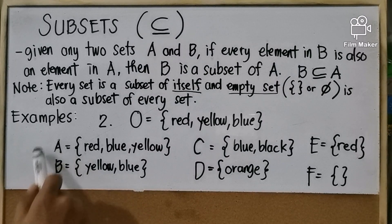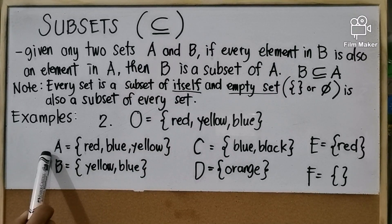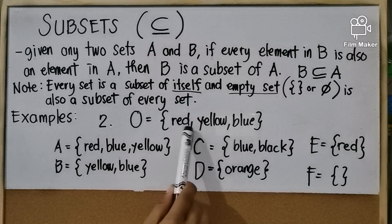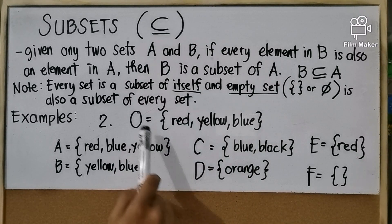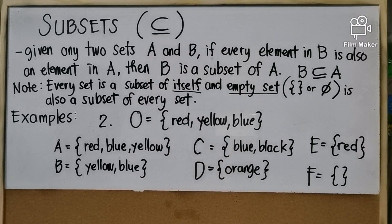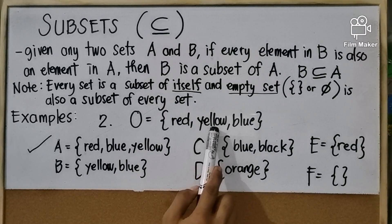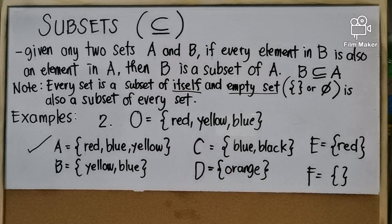Example number two: let's identify which sets are subsets of set O. Set A contains red, blue, and yellow. Red is found in set O, blue is also found in set O, and yellow is also found in set O — so set A is a subset of set O. Next, set B contains yellow and blue. Yellow is found in set O and blue is also found in set O — so set B is a subset of set O.